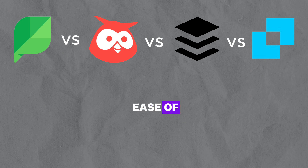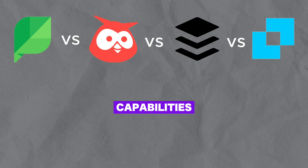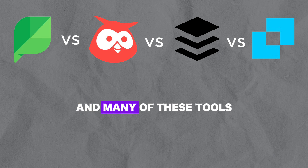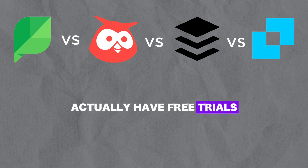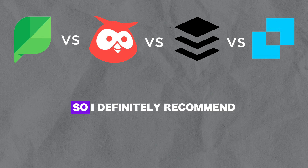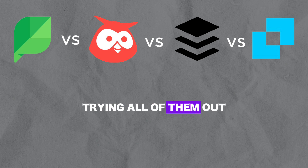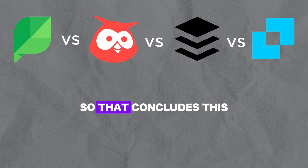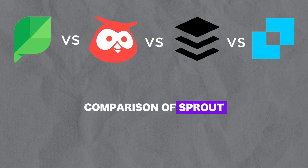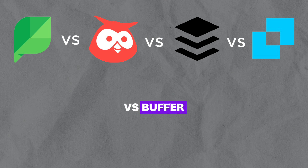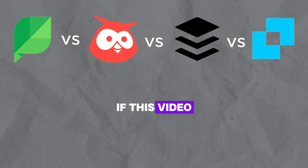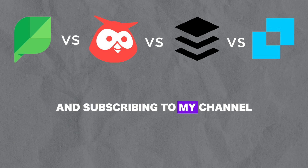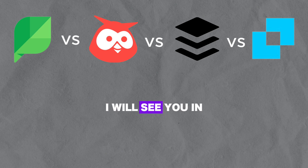Consider factors like ease of use, pricing, and integration capabilities to make an informed decision — many of these tools have free trials that let you try them out, so I definitely recommend trying all of them and seeing which one is best for you specifically. That concludes this comparison of Sprout Social vs Hootsuite vs Buffer vs Later. If this video was helpful please consider leaving a like and subscribing to my channel.